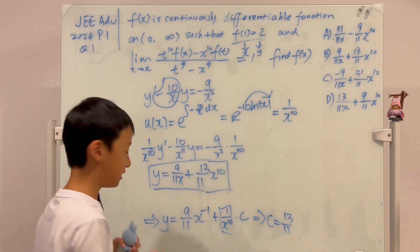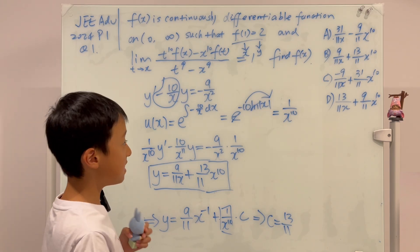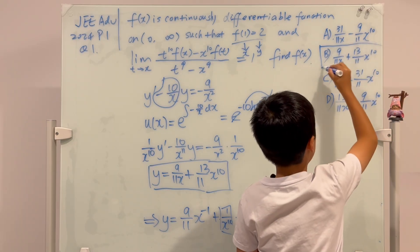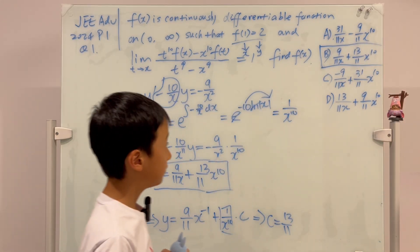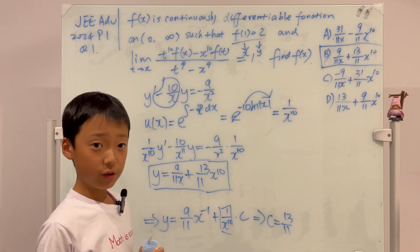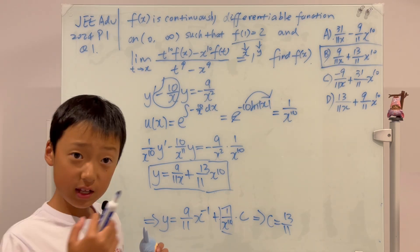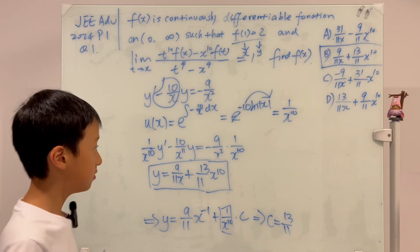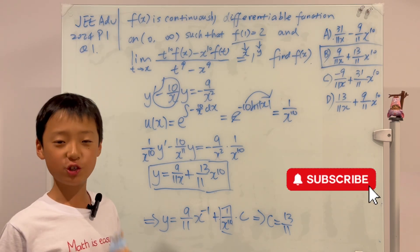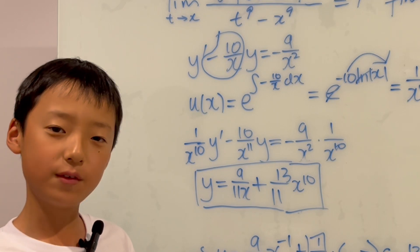So the final answer is y = 9/(11x) + (13/11)·x^10. Looking at the choices, that matches option B — so B is our final answer for this JEE Advanced 2024 question. Thank you so much for watching, and if you enjoyed the video, please consider liking and subscribing. If you want to master something, teach it.